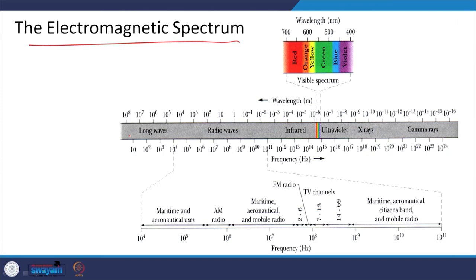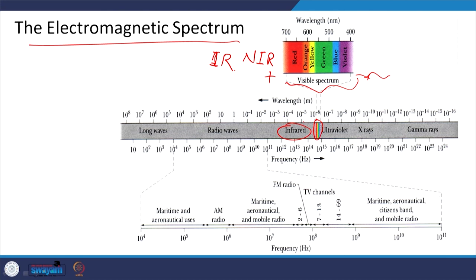The electromagnetic spectrum is a very broad spectrum — it starts from gamma rays to long waves. A very small patch of it, only about 300 to 350 nanometers, is called the visible spectrum. When talking about optical sensors, we are essentially talking about this range plus a little extension, say from violet up to NIR or maybe IR — not more than that. So we are talking about this small patch of the electromagnetic spectrum.